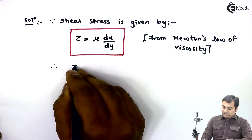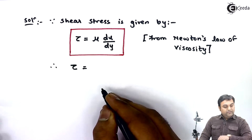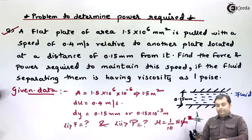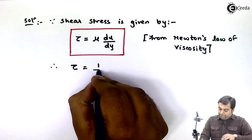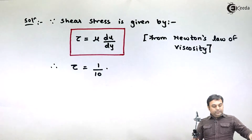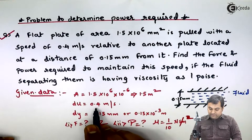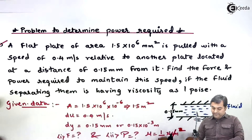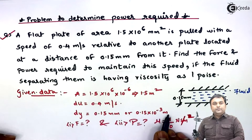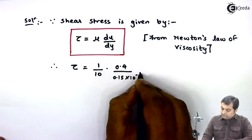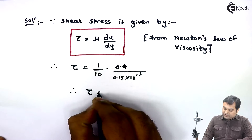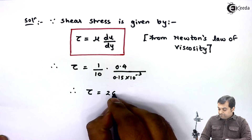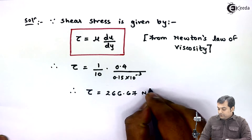Therefore shear stress τ = μ × (du/dy). The value of μ is 1 poise = 1/10 N·s/m². du = 0.4 m/s and dy = 0.15 × 10⁻³ m. Substituting these values, the shear stress comes out to be 266.67 N/m².